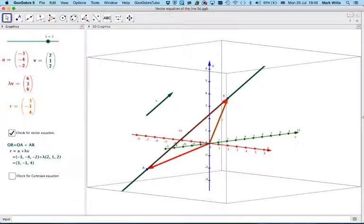You can see the point R is the same as going A plus some multiple of this vector, which is parallel to the line.